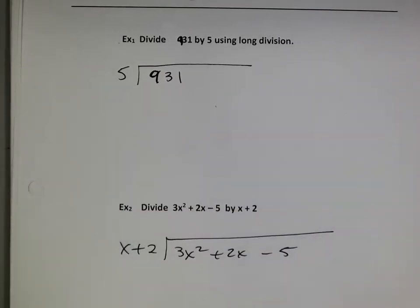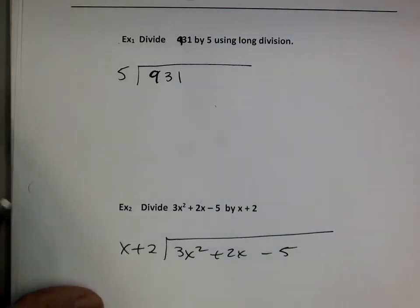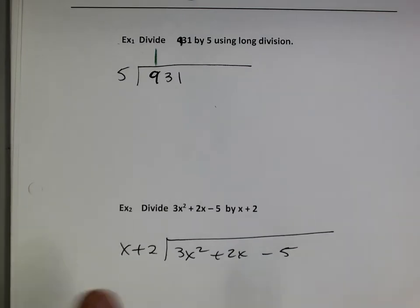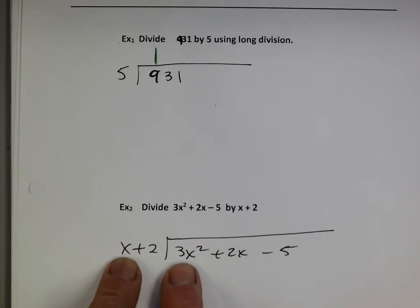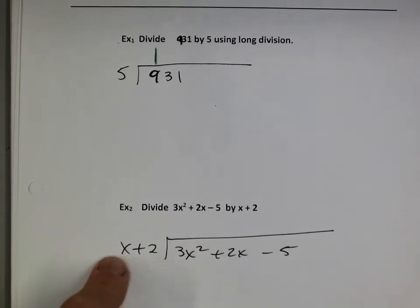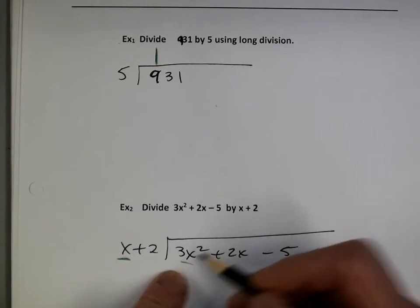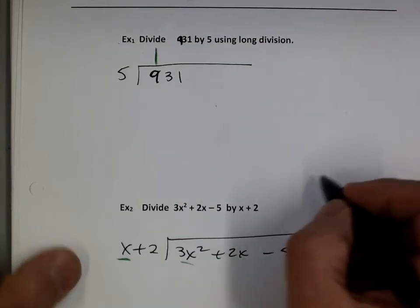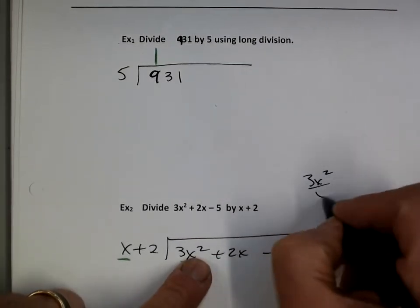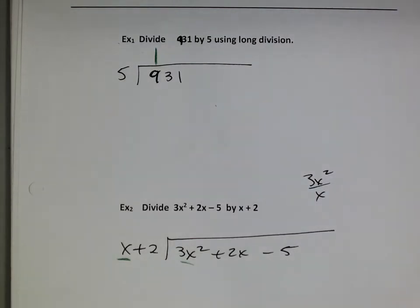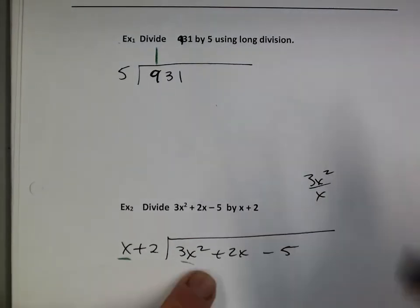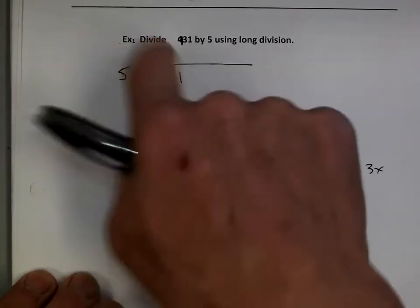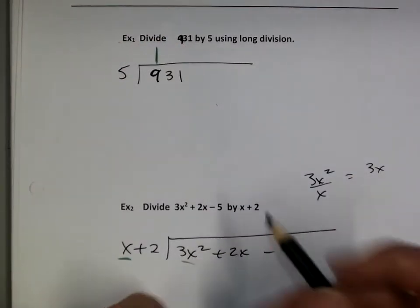You agree with that? So you put the 1 up here. So same thing — x goes into 3x squared. If you can't quite do that, I always say do some division on the side: 3x squared divided by x. Maybe it's easier to see. But x goes into 3x squared — hopefully you guys see that it goes in 3x times. Just like 5 going into 9 one time, x goes into 3x squared 3x times.